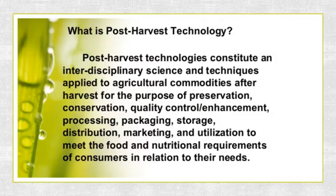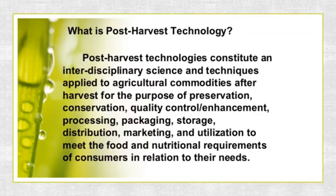Simply put, post-harvest technology is implemented on harvested food products such as fruits, vegetables, and crops. It is mainly done to maintain the quality — that is, the appearance, texture, flavor, and nutritive value — to protect food safety, and to reduce losses between harvest and consumption. This technology is mainly implemented to secure the various characteristics of food items between harvesting and consumption.